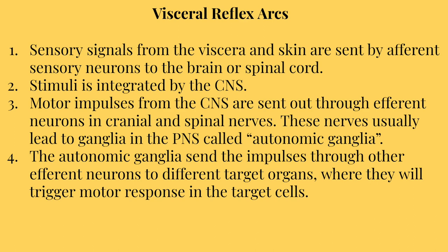Let's talk about visceral reflex arcs and how they work in general. First, sensory signals from the viscera and skin are sent by afferent sensory neurons to the brain or spinal cord — afferent means information is being sent toward the CNS. Second, the stimuli is integrated by the CNS. Third, motor impulses are sent out through efferent neurons in cranial and spinal nerves, usually leading to autonomic ganglia in the PNS. Fourth, the autonomic ganglia send impulses through other efferent neurons to different target organs, triggering a motor response.